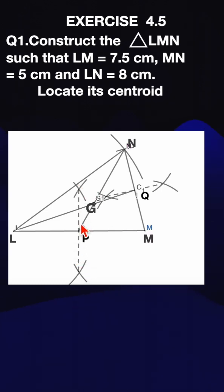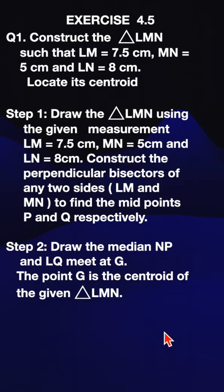Join this midpoint with N to get the median. Similarly, find the median here, and the point of intersection of two medians is the centroid G. Here are the steps of construction.